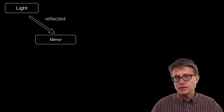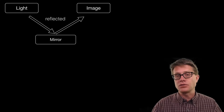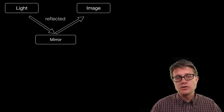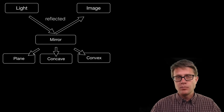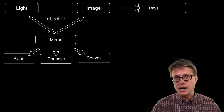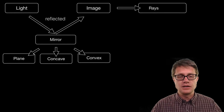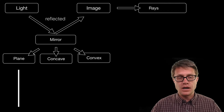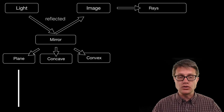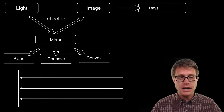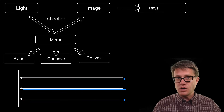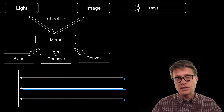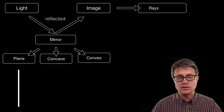When light hits a mirror it is reflected off the surface and it can create an image. The three mirrors we will look at are plane mirrors, concave mirrors, and convex mirrors. To figure out where the image actually is, you can draw a series of rays — straight lines that represent where the light is moving. If we draw a plane mirror and have rays moving towards it, as they hit the surface they are going to bounce right back, and we can figure out where the image actually is.